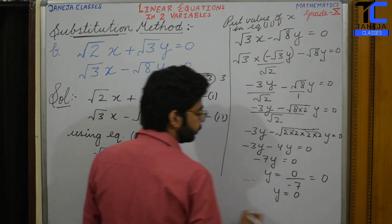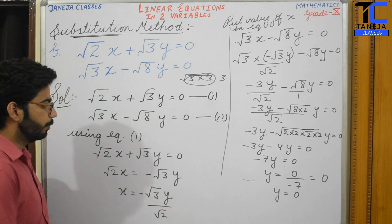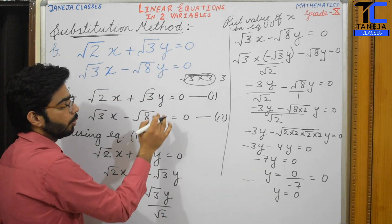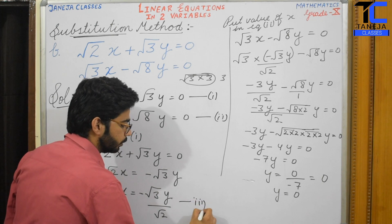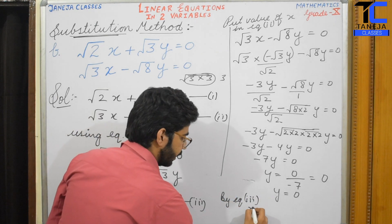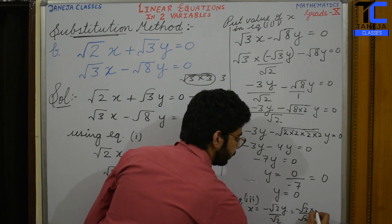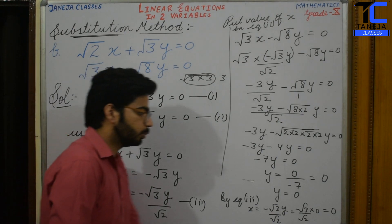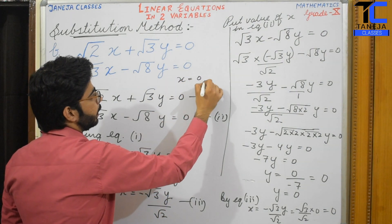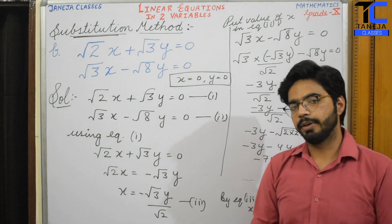So y equals 0. Now we can find the value of x by putting y equals 0 into the expression for x: x equals minus root 3y upon root 2 equals minus root 3 upon root 2 multiplied by 0, which equals 0. So x equals 0 and y equals 0. That is the answer: x equals 0 and y equals 0. This is the substitution method applied to equations with roots.